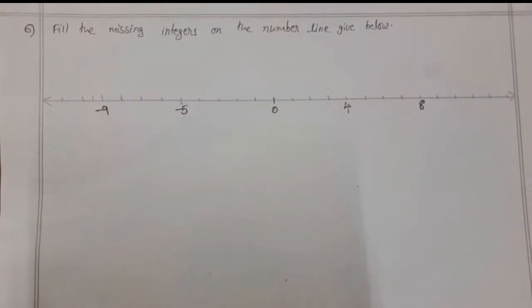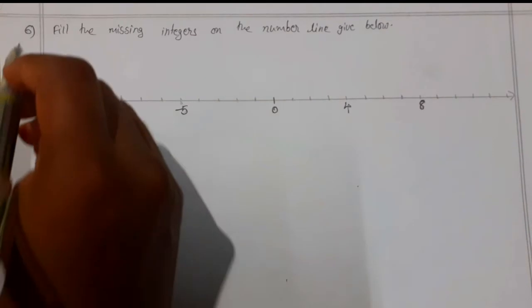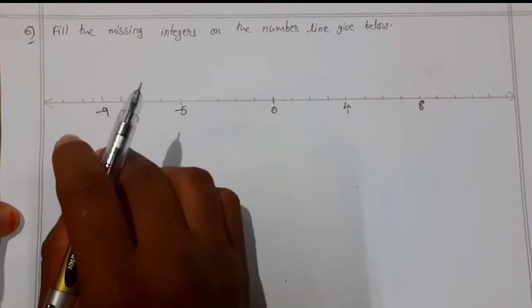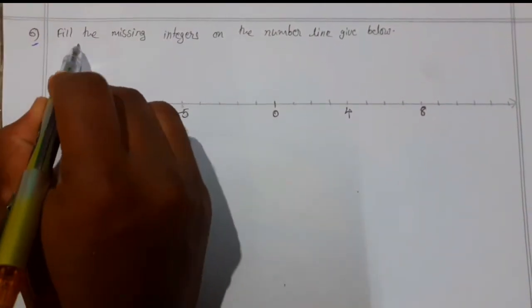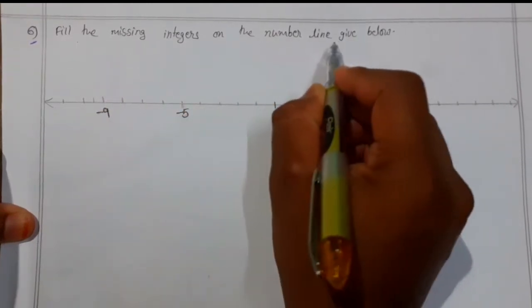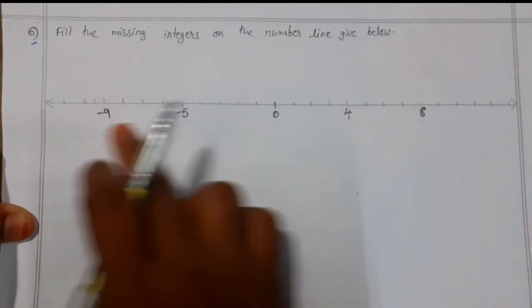Hi students, welcome to SRMAS Academy. Now we are going to discuss the sixth problem of Exercise 1. Let me explain the question: fill the missing integers on the number line given below.